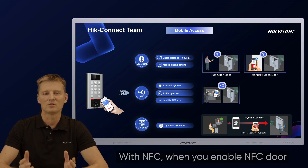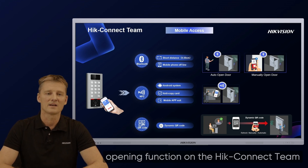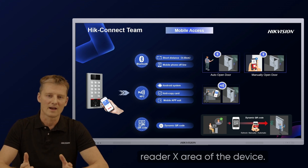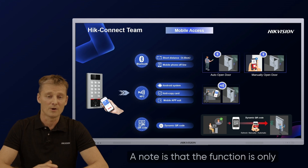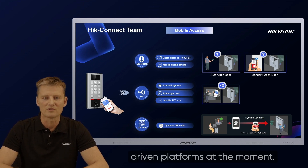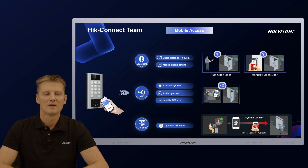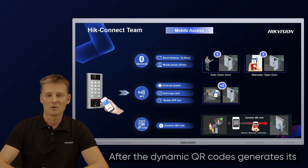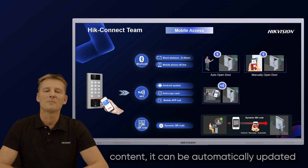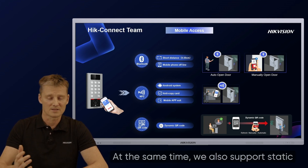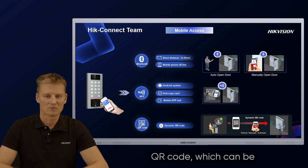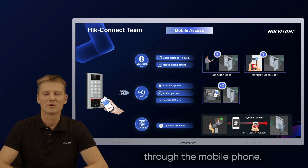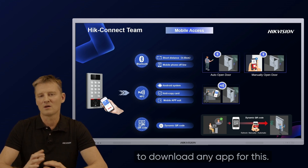With NFC, when you enable the NFC door opening function on the HiConnect Team app, you can unlock the door by simply placing your phone close to the card reader NFC area of the device. Note that this function is currently only available for Android platforms. HiConnect Team also supports dynamic QR codes to open the door. After the dynamic QR code generates its content, it can be automatically updated and refreshed manually. We also support static QR codes, which can be used as a temporary pass. The operator can add a temporary pass for a visitor and send it via mobile phone, and the visitor does not need to download any app.